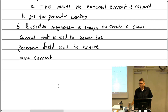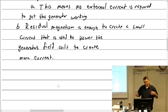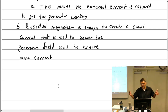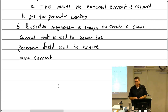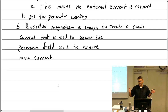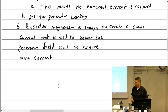The generator core has laminations of soft iron with windings, and a steel shaft. The field coils have a higher retentivity — they hold residual magnetism. The armature has low retentivity because you don't want it to retain magnetism since it's constantly changing polarity.